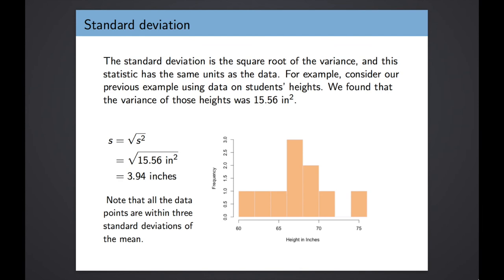We're going to be talking about the standard deviation a lot more during this class — it's a concept that's really important to data analysis. One more thing to point out: in this data set illustrated in the histogram, you should notice that all of the data points are within three standard deviations of the mean. A standard deviation is about 4 inches, so we don't have any data points more than 12 inches below or above the mean. All of our data is pretty neatly contained within three standard deviations of the mean in both directions. This is going to be a really powerful concept — for most distributions, all of the data is contained pretty nicely within three standard deviations of the mean. It's a really powerful concept in statistics, so I'm just previewing it here.